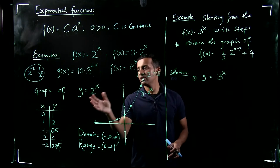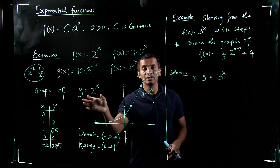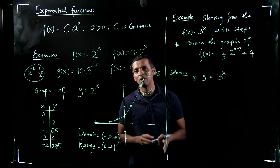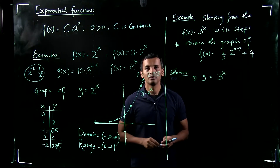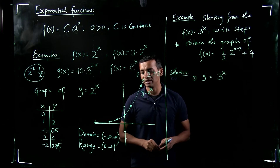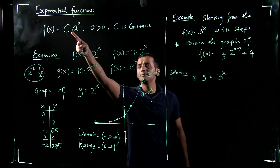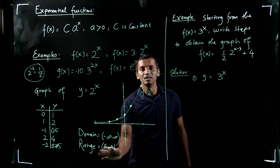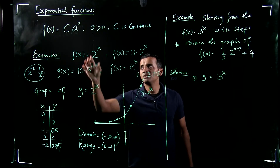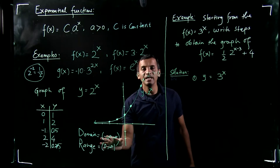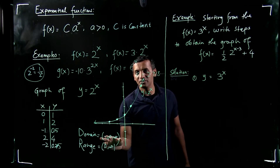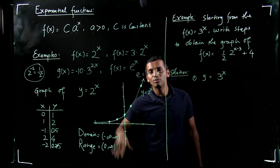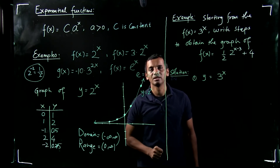In general, if c is positive, the domain is negative infinity to infinity and the range is 0 to infinity. If c is negative, the domain is still negative infinity to infinity, but the range will be negative infinity to 0 because the graph will be below the x-axis.